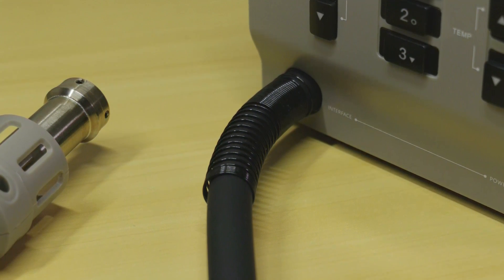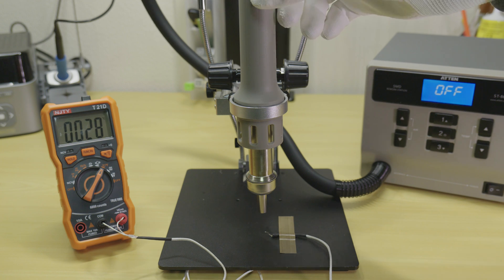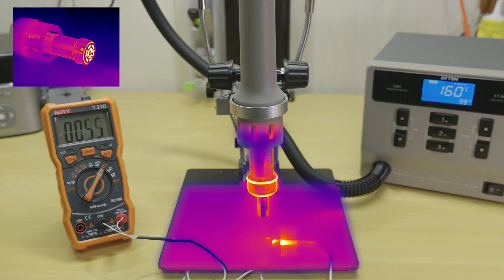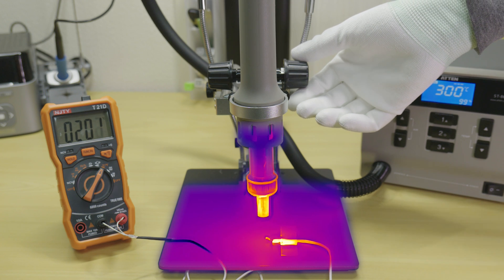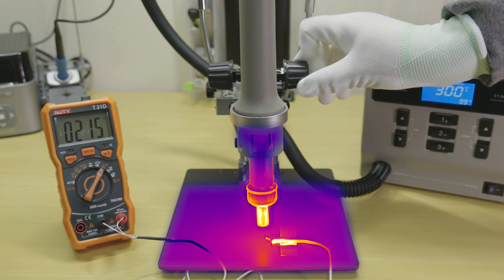Now moving across to some practical tests. Checking the heater ramp and throughput, we can see the heat up time is very fast and throughput appears to be quite even. As mentioned in previous reviews, recording the output temperature like this should be taken with a grain of salt, as air speed, nozzle diameter and measurement distance can all affect the recorded output temperature. This is just being done to help demonstrate the heater ramp times.